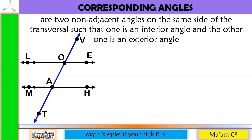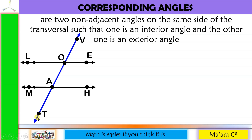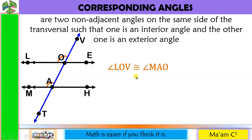The last one is corresponding angles. These are two non-adjacent angles on the same side of the transversal such that one is an interior angle and the other one is an exterior angle — same side, but one inside and the other one outside. So let us get one from the outside and another one on the inside. Angle LOV and angle MAO are corresponding angles and they are congruent. On the right side, angle VOE and angle OAH are corresponding angles and they are congruent.